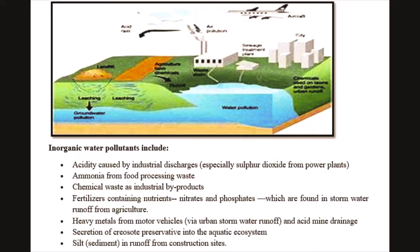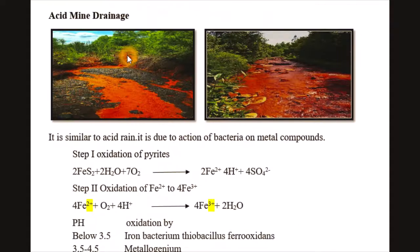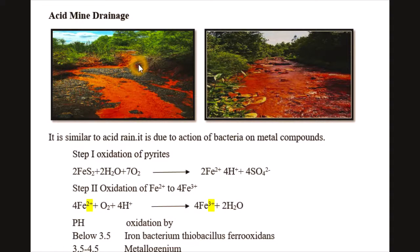Let's see acid mine drainage first. It is similar to acid rain and is due to the action of bacteria on metal compounds. Acid mine drainage results from the presence of sulfuric acid produced during the oxidation of pyrite. In this diagram you can see the color of water changes because of acid mine drainage.